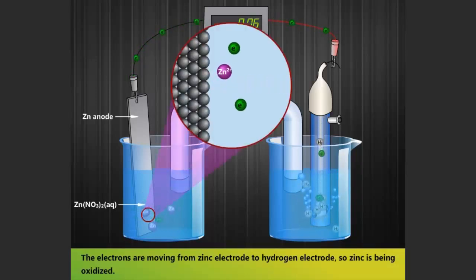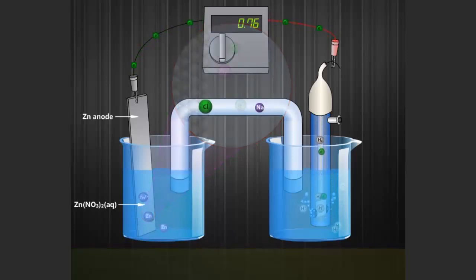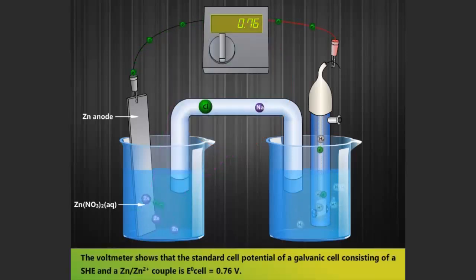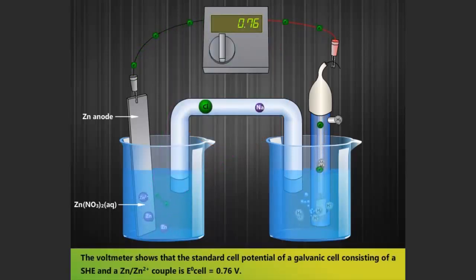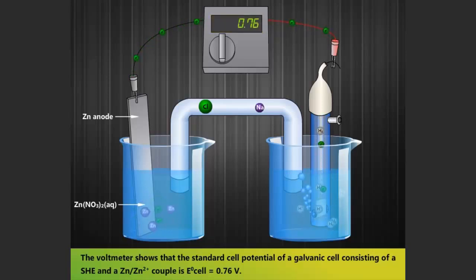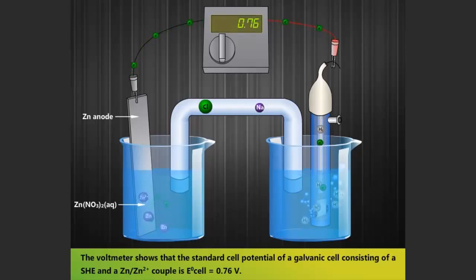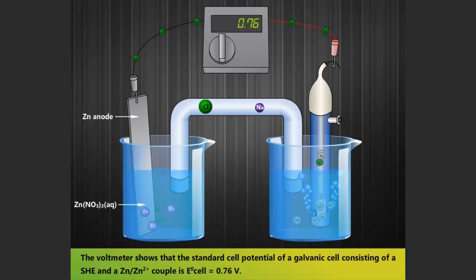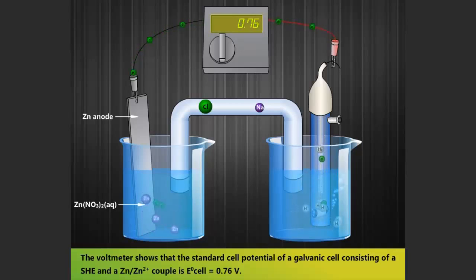So, Zinc is being oxidized. The voltmeter shows that the standard cell potential of a galvanic cell consisting of a SHE and a Zn/Zn²⁺ couple is equal to 0.76V.